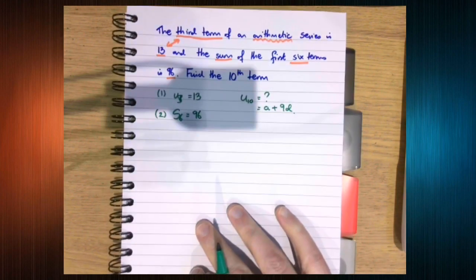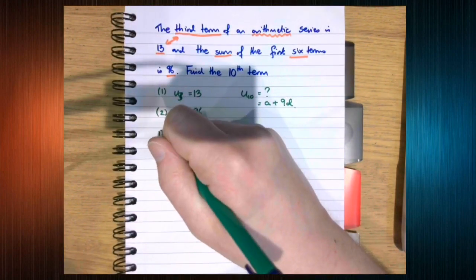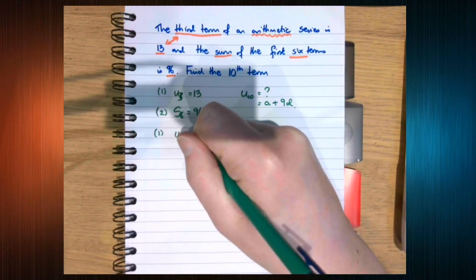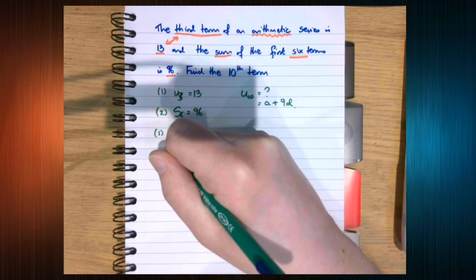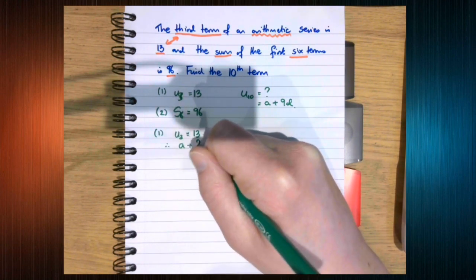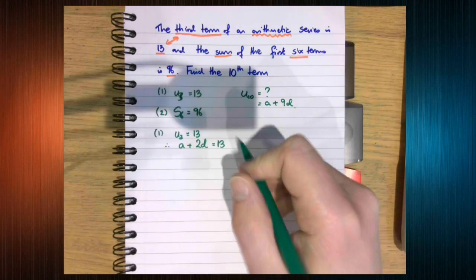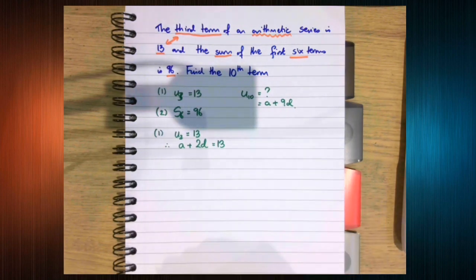So let's do that. Equation 1, we know that u3 is 13. So a plus 2d is 13. Can't do anything more than that. That's our equation.